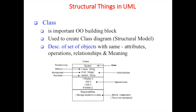A class provides a description of a set of objects with the same attributes, operations, relationships, and meaning. As we can see in the figure, the class name here is 'Student'. A class generally has three compartments: the first includes the class name, the second has attributes, and the third has operations where we define activities. There is also an optional fourth compartment called responsibility.